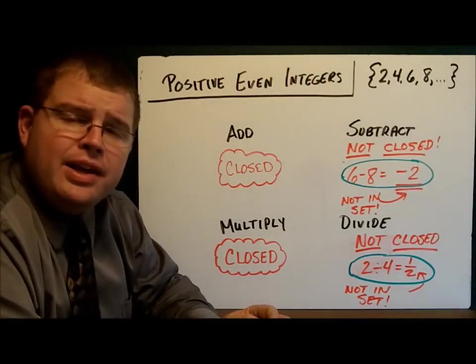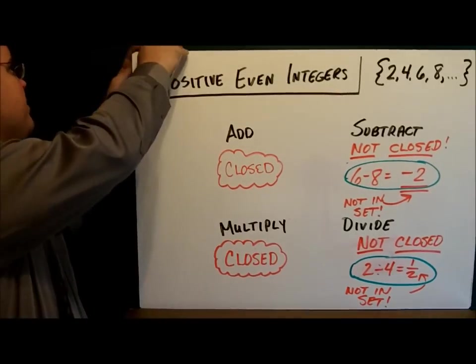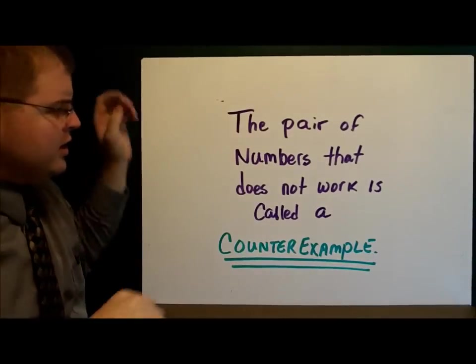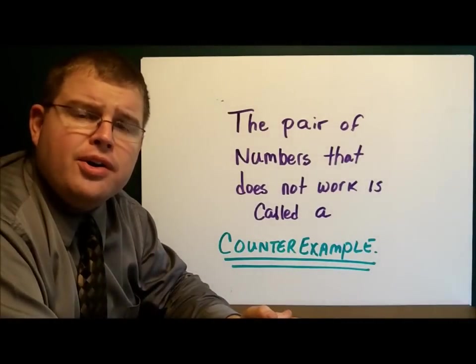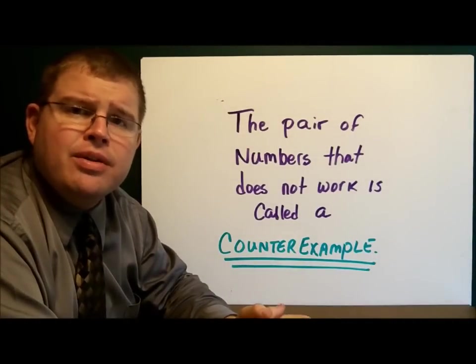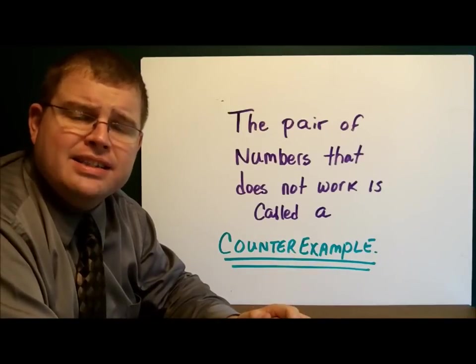By the way, you know those examples you found that didn't work? They have a name. The examples that don't work are called counter-examples. So really, when you prove me wrong, you're looking for one counter-example. All it takes is one to show that the set is not closed.